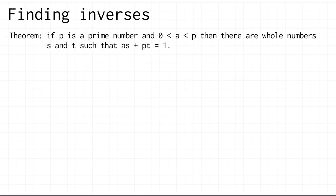So why do we need this? We're going to use it repeatedly when we prove the following theorem: if you've got a prime number p and a number a between 0 and p, then there are whole numbers s and t such that a times s plus p times t equals 1.